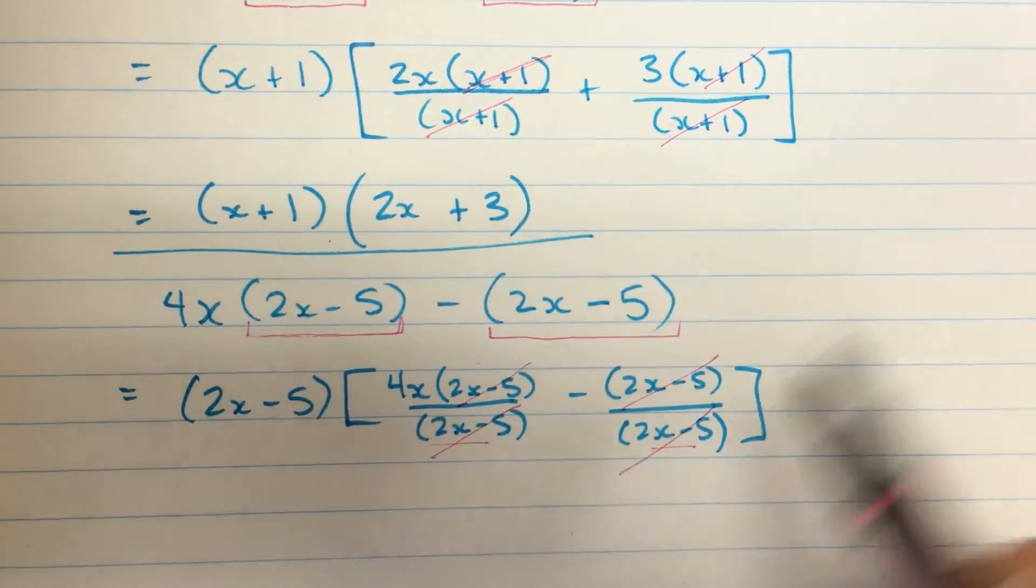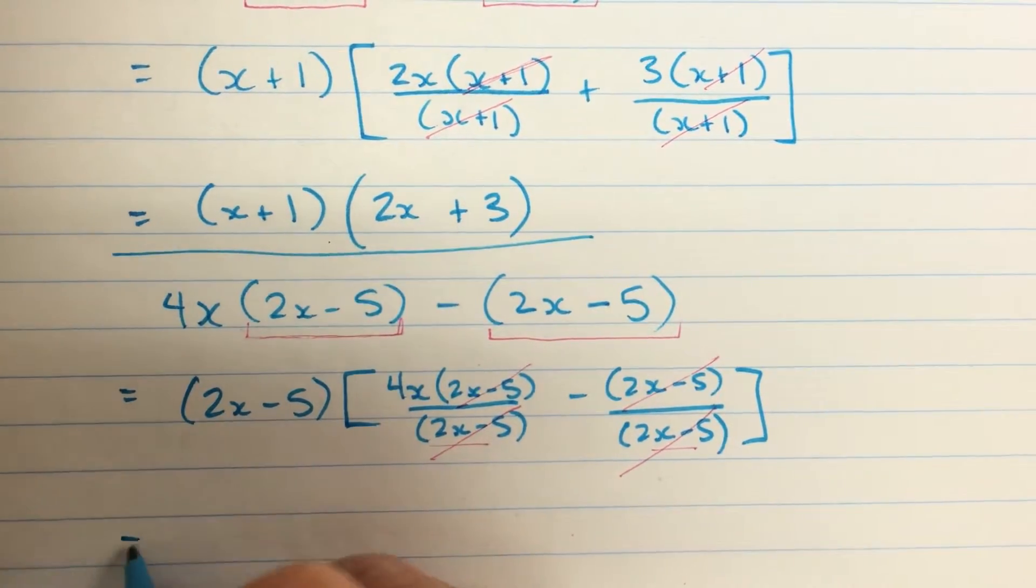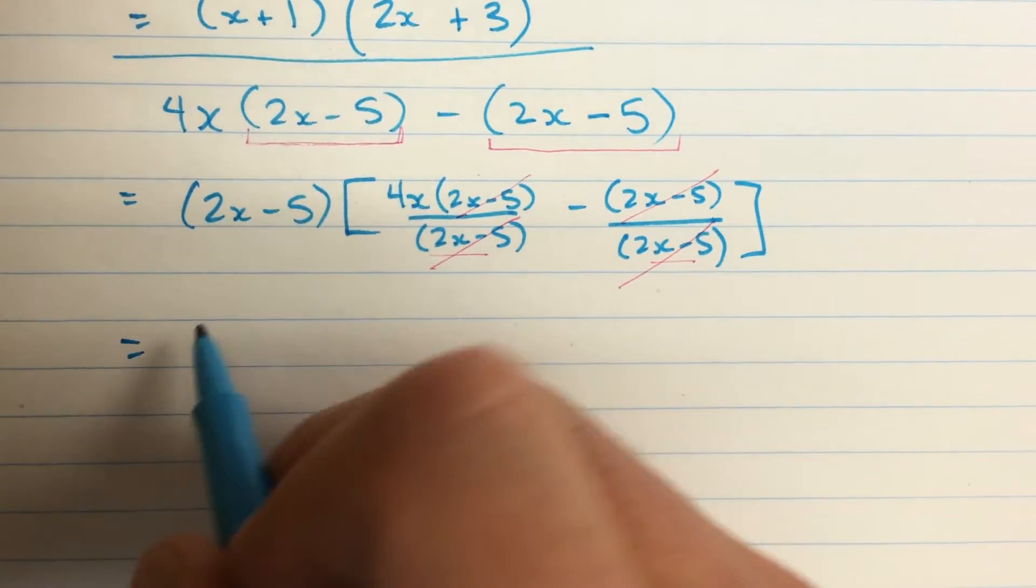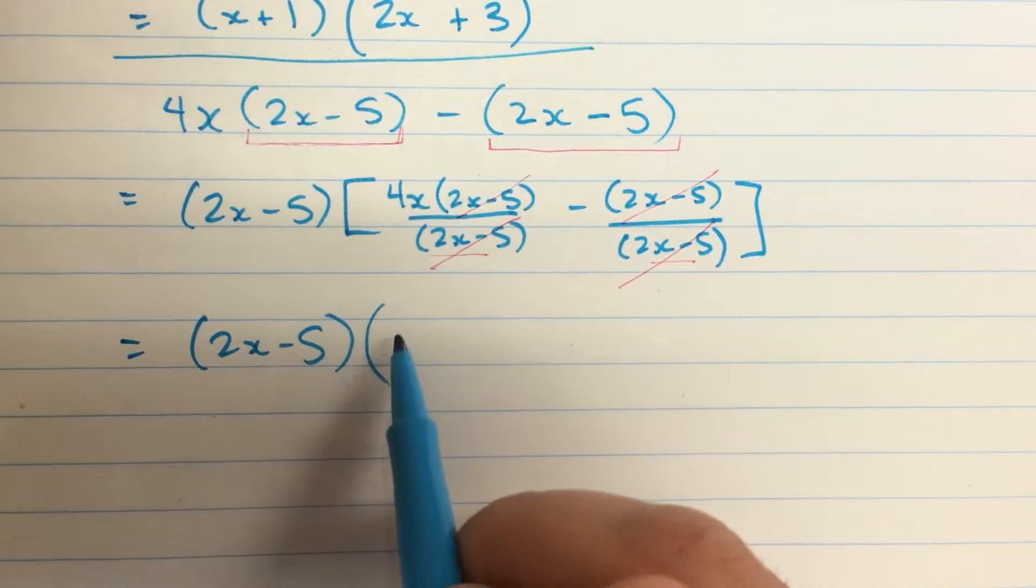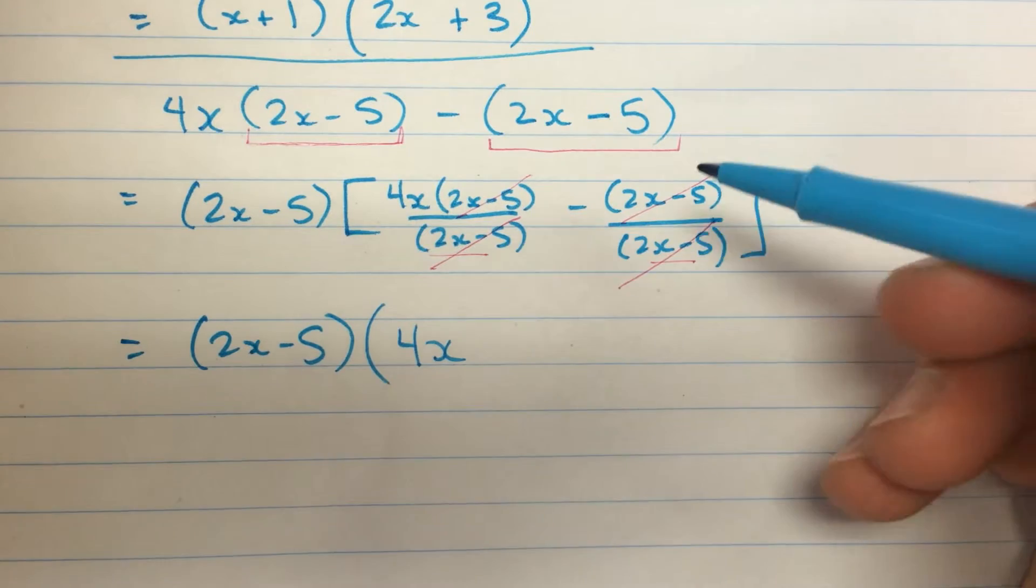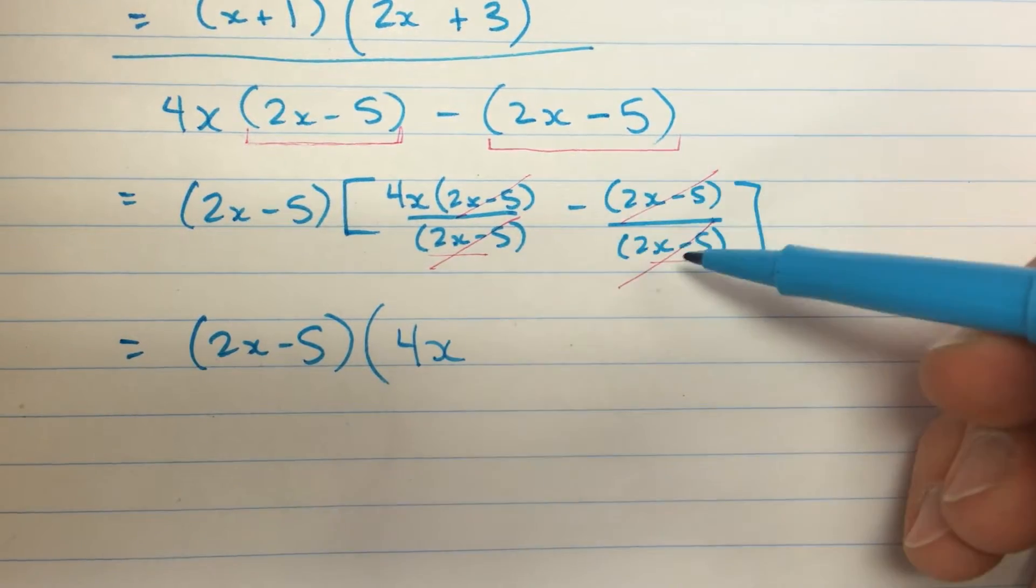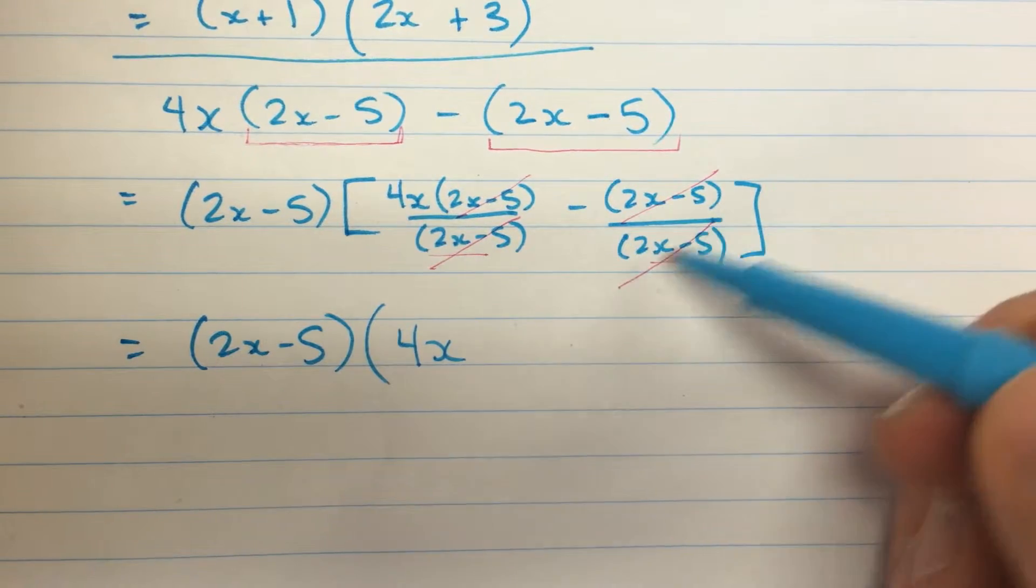Again cancelling here and here. 2x minus 5 out front. In the bracket we have 4x left here. That's fine. Now this one let's be really careful. This isn't zero. This is something divided by the same thing.